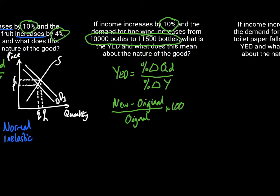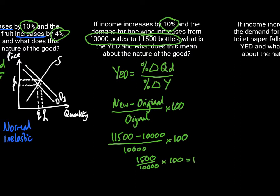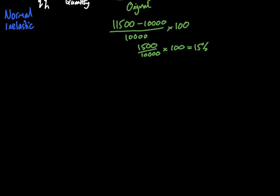What we need to do first is calculate what that change is as a percentage so we can put it into the top half of my formula. A percentage change is the new value minus the original value divided by the original value and multiplied by 100. The new value is 11,500. The original is 10,000. That gives us 1500 over 10,000 multiplied by 100, which equals 15%. So that's the first stage that I need.